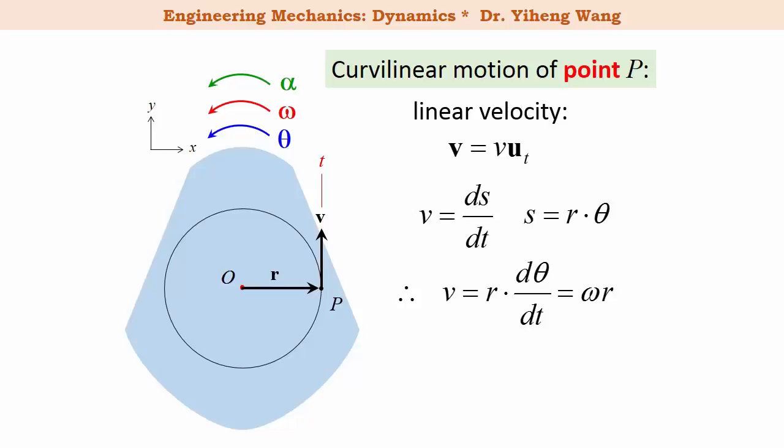In vector formulation, the linear velocity of point P as a vector equals the cross product of angular velocity of the rigid body as a vector — which has a component of k — crossed with the position vector of point P.